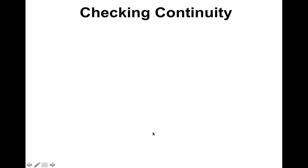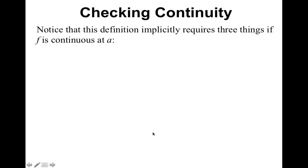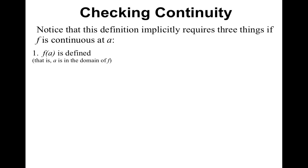So in order to check continuity, we have to do three things. Every time it asks you, is this function continuous, you have to start with these three things. First one: f of a is defined, so that means that a is in the domain of f.